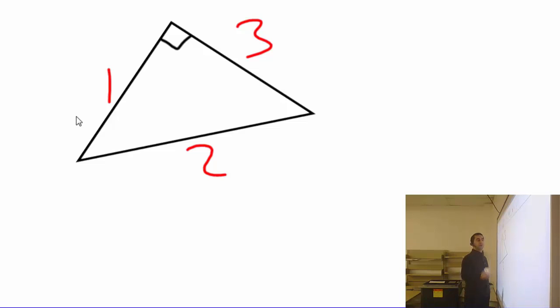But tell me, one, two, three - the letter C is the most important. Which side, one, two, three, is the C? Why do you say two? Because it's not touching the 90 degrees. The 90 degree does touch side number one and side number three, but it does not touch number two. So therefore, side number two becomes C. So now let's make a quick example.